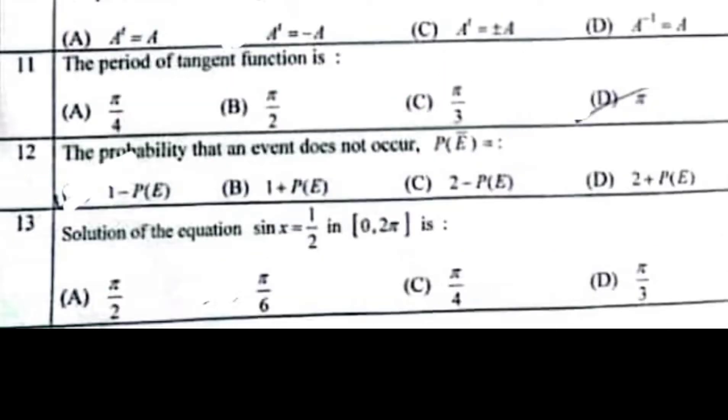The period of tangent function is π. The probability that an event does not occur, P(E) equals 1 minus P(E). The proof is on page number 245. Solution of the equation sin x equals 1 over 2 in [0, 2π] is π over 6. 1 minus 2 sin squared alpha equals cos 2 alpha. Cos inverse of 1 over 2 equals π over 3.